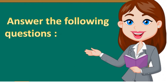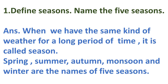After revising all the topics, let's now attempt the textual exercises. Our first question is: Define seasons and name the five seasons. The answer is: when we have the same kind of weather for a long period of time, it is called a season. The five main seasons are spring, summer, autumn, monsoon, and winter.